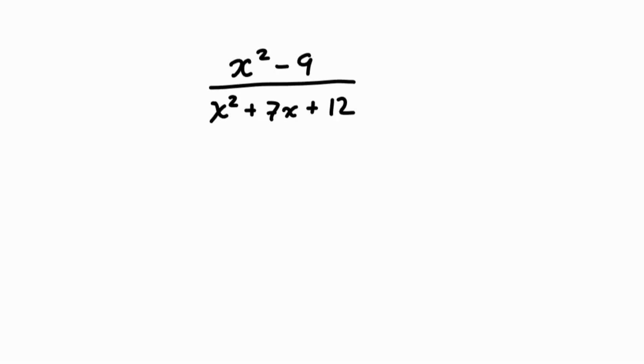Let's try another one. In this rational expression, we have two quadratic expressions, one in the numerator and one in the denominator. In the numerator, we have a difference of squares, x squared minus 9. In the denominator,